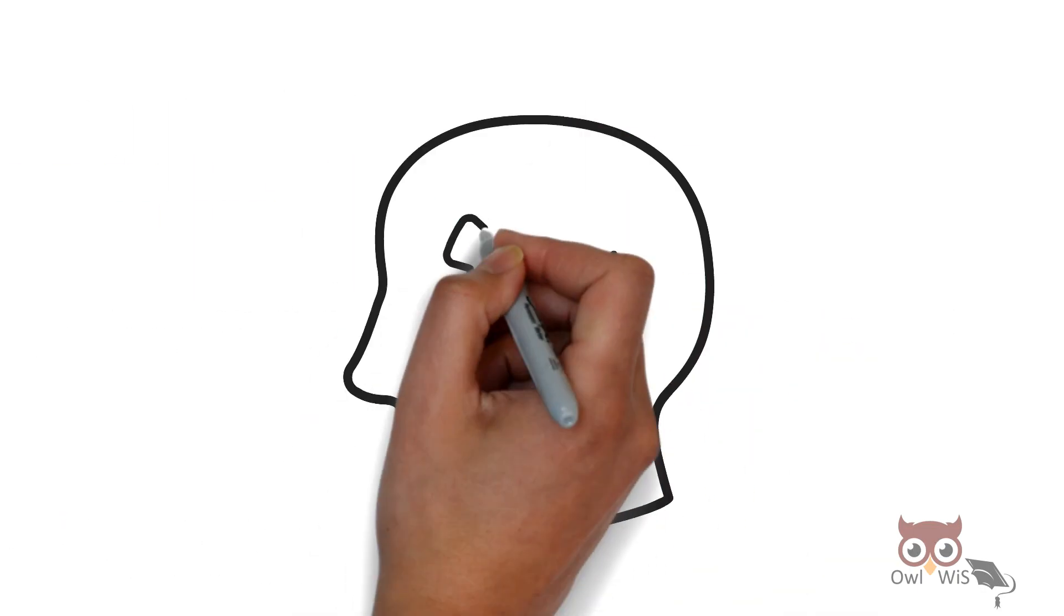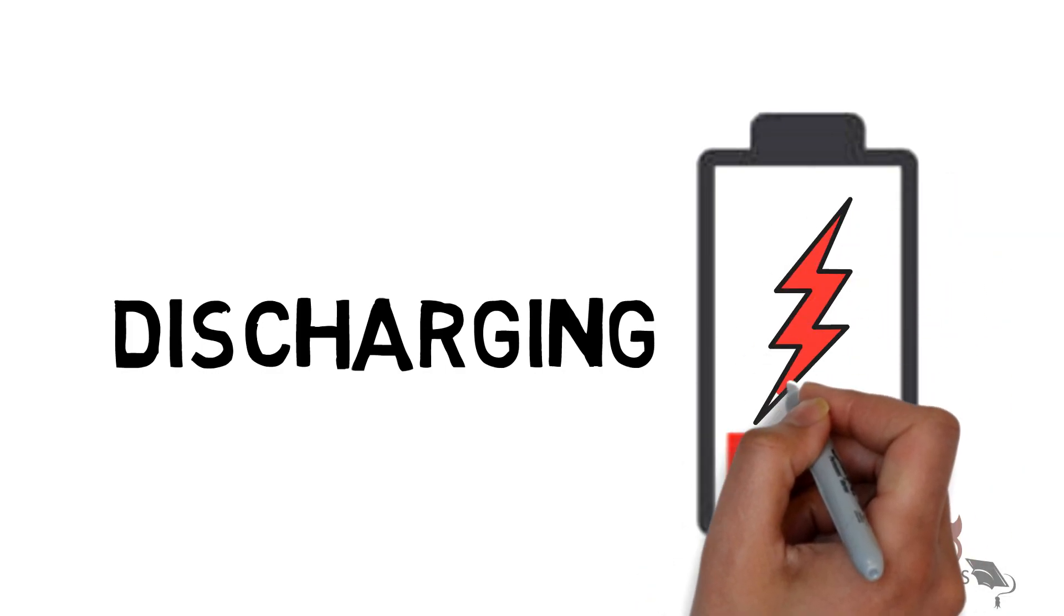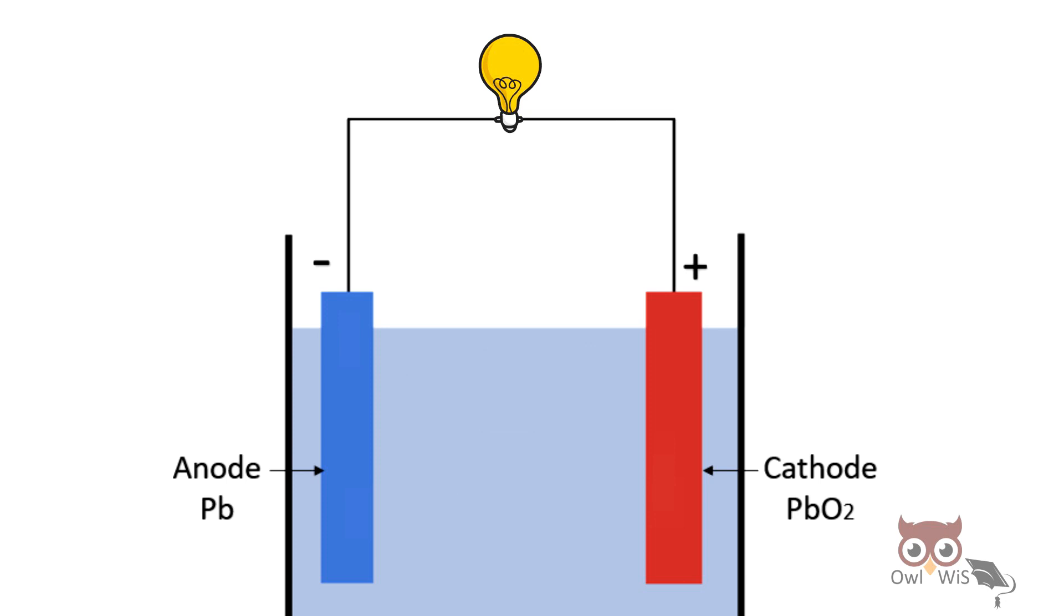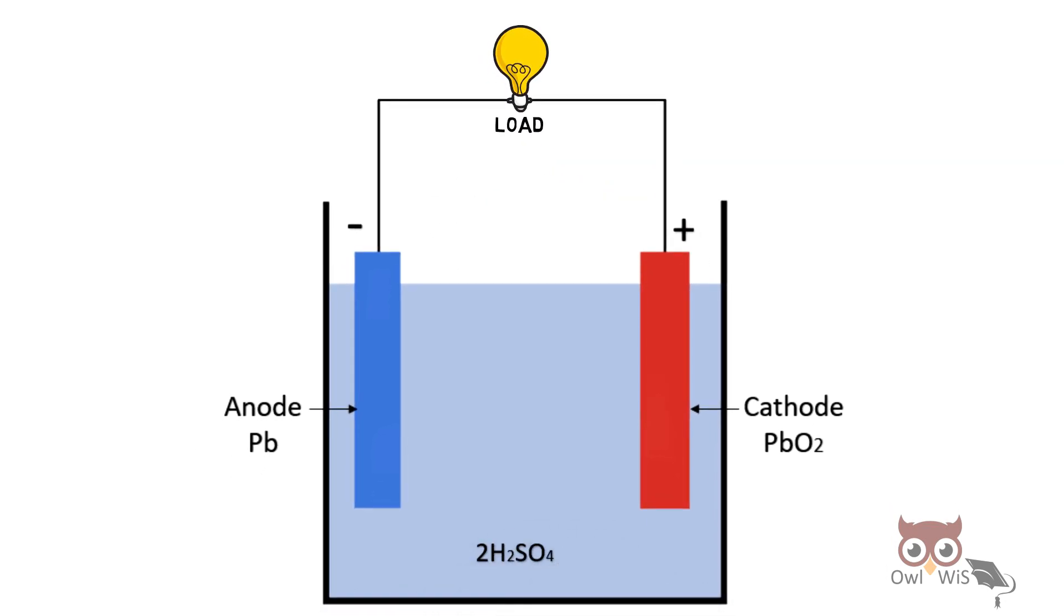Let us understand the working during discharging of the battery cell. When a load is connected across the plates, the sulfuric acid breaks up into positive hydrogen ions and negative sulfate ions.